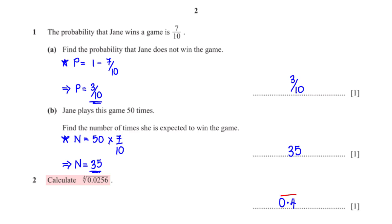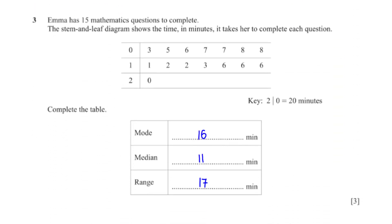Emma has 15 mathematics questions to complete. The stem and leaf diagram shows the time in minutes it takes for her to complete each question. Complete the table. The mode is the most recurring number, and that is 16.